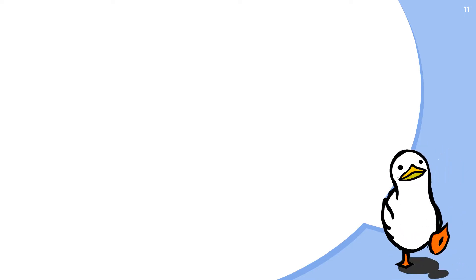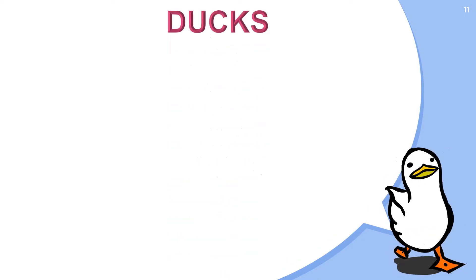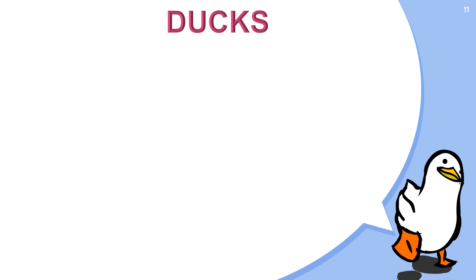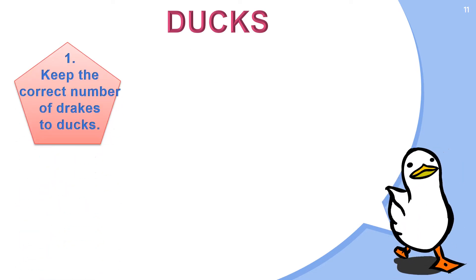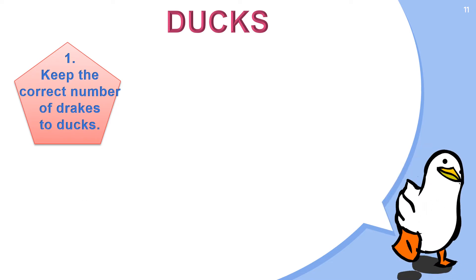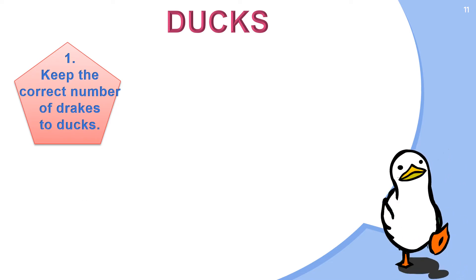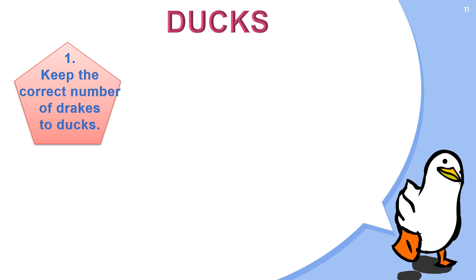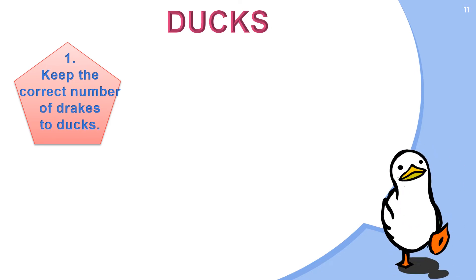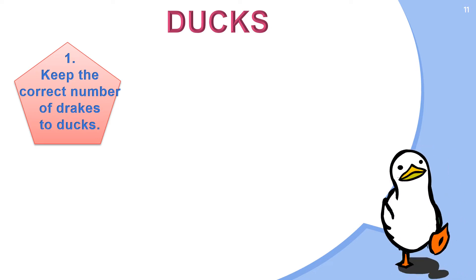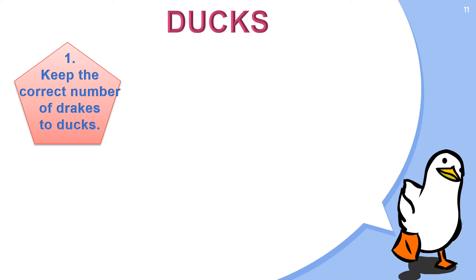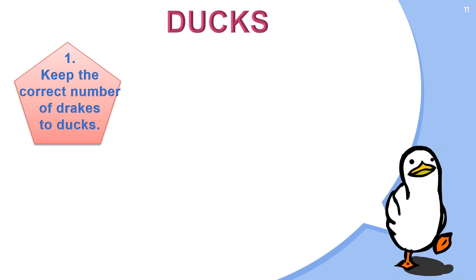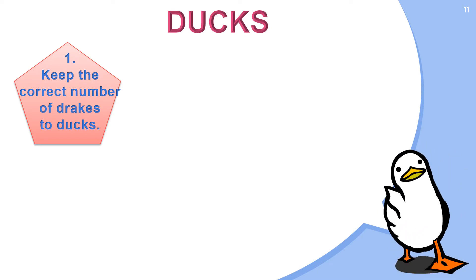The fourth animal that we have are ducks. In breeding ducks, you have to do the following. First, keep the correct number of drakes to ducks. A male duck is called a drake and a female duck is called a duck. Keeping too many drakes with too few females can cause injury to the female as they can be mated too often. If you have too many drakes, you can keep them in a separate pen during the breeding season.